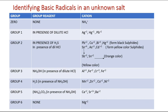This is a general classification. As you can see, in zero group we have only the ammonium ion. Because we have only one ion, we don't have a group of ions, so we don't need a group reagent.